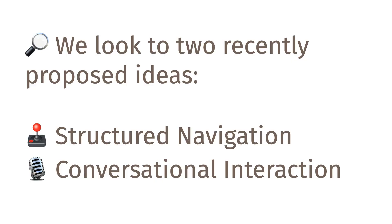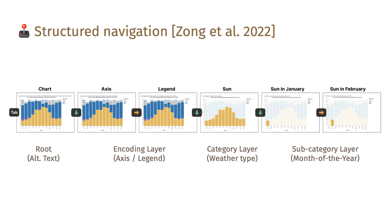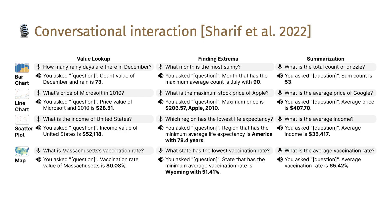We investigated two recently proposed ideas: structured navigation and conversational interaction. Researchers recently proposed a structured navigation approach that decomposes a chart into a hierarchical representation. The root contains alternative text, while the next level includes visual encoding nodes such as axes or legends. One level deeper, users can explore data categories, and at the bottom of the tree are data points. Users move across levels using up and down arrows, and across subtrees or data points using left and right arrows. In contrast, the conversational approach involves natural language interaction, where users ask questions about the chart and the system provides answers. The original system was limited to single-series data, but we extended it to support multiple-series data for our study.